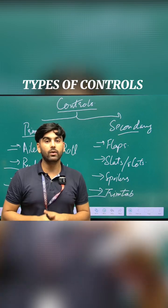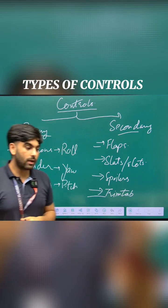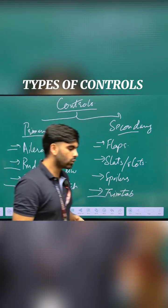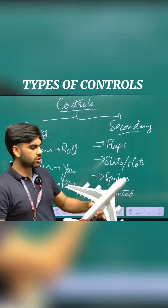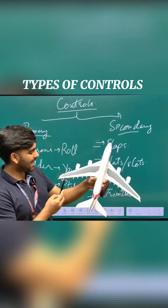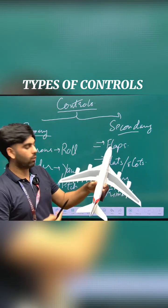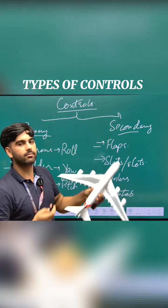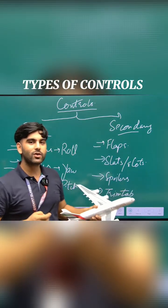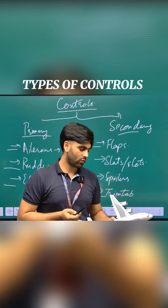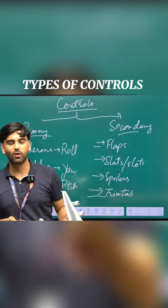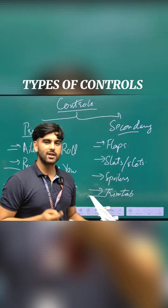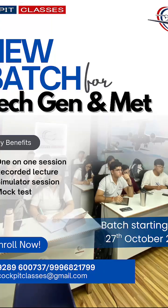If you want me to explain the secondary controls in more depth, comment down. I also have a question for you: why are ailerons situated at the end of the wing and not at the center? Comment down the reason. For more informative videos like this, follow Cockpit Classes.